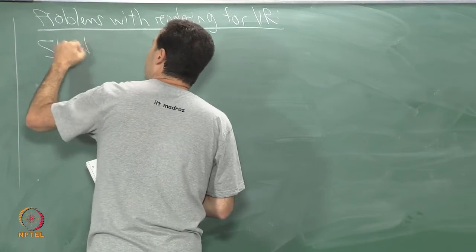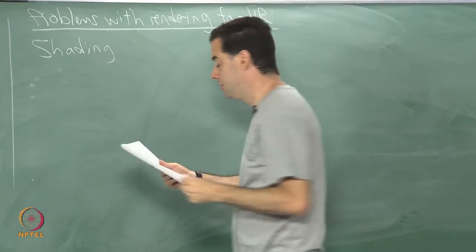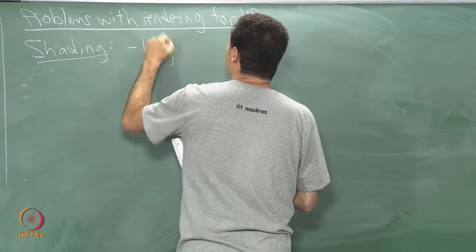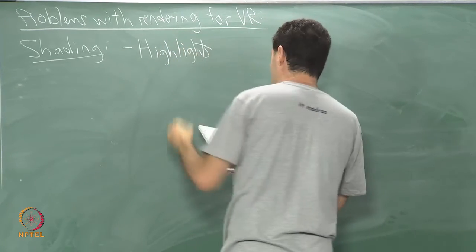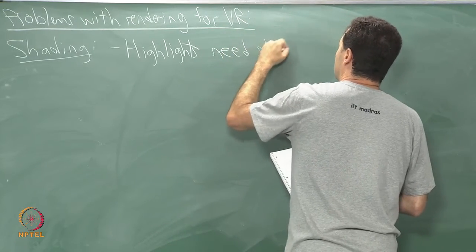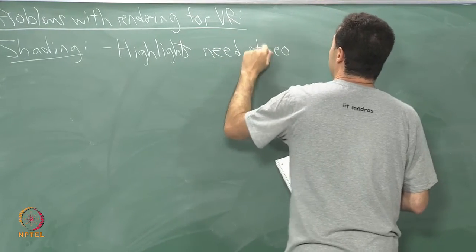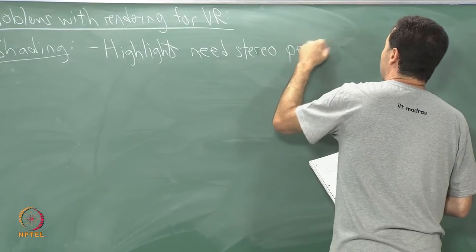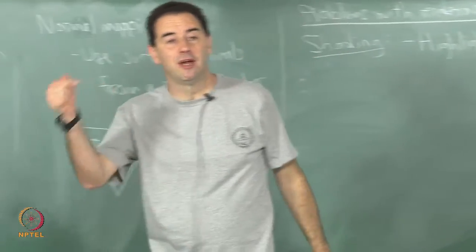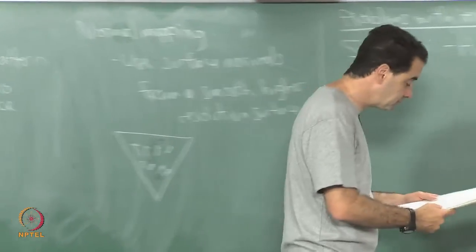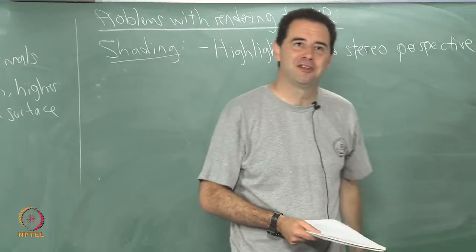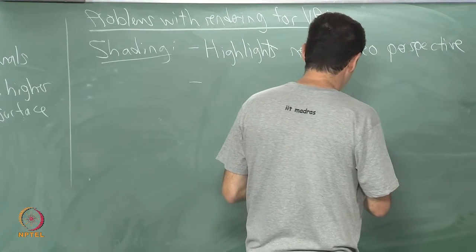Let us go into the shading part. One of the troubles is that highlights or specularities need stereo perspective, so you have to do twice the work. You have to take into account the left eye and right eye perspective. If you do not do this it will not look right — the convergence will not look correct on the surface of the object.